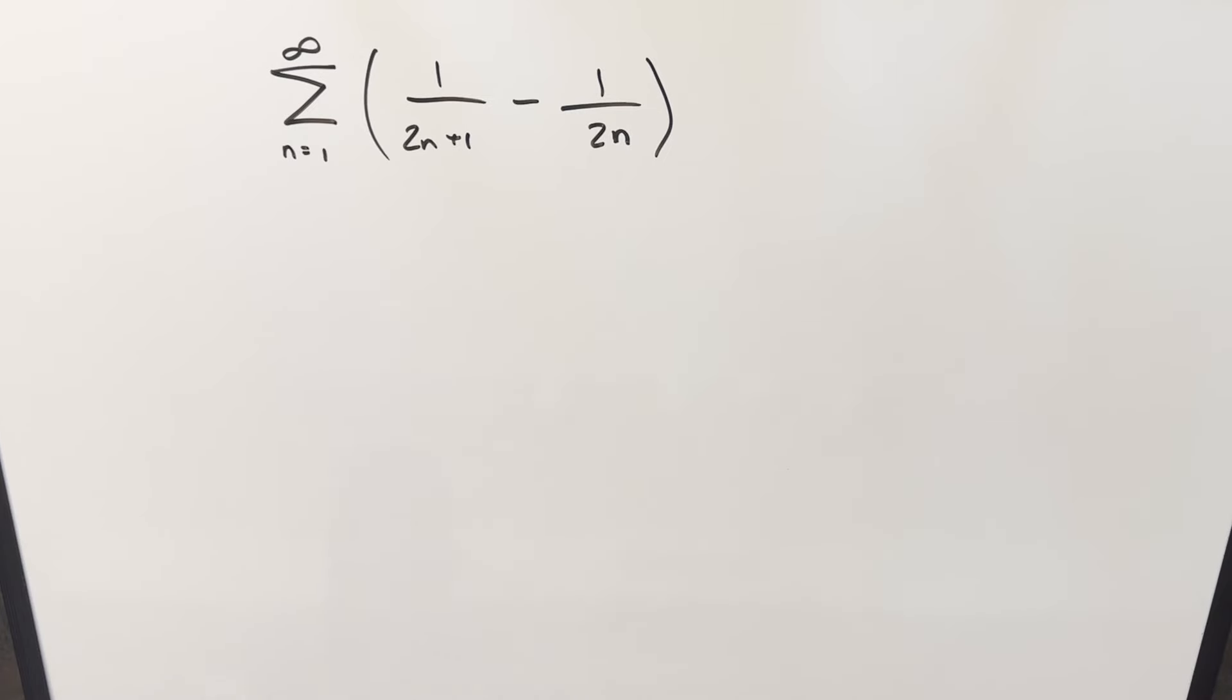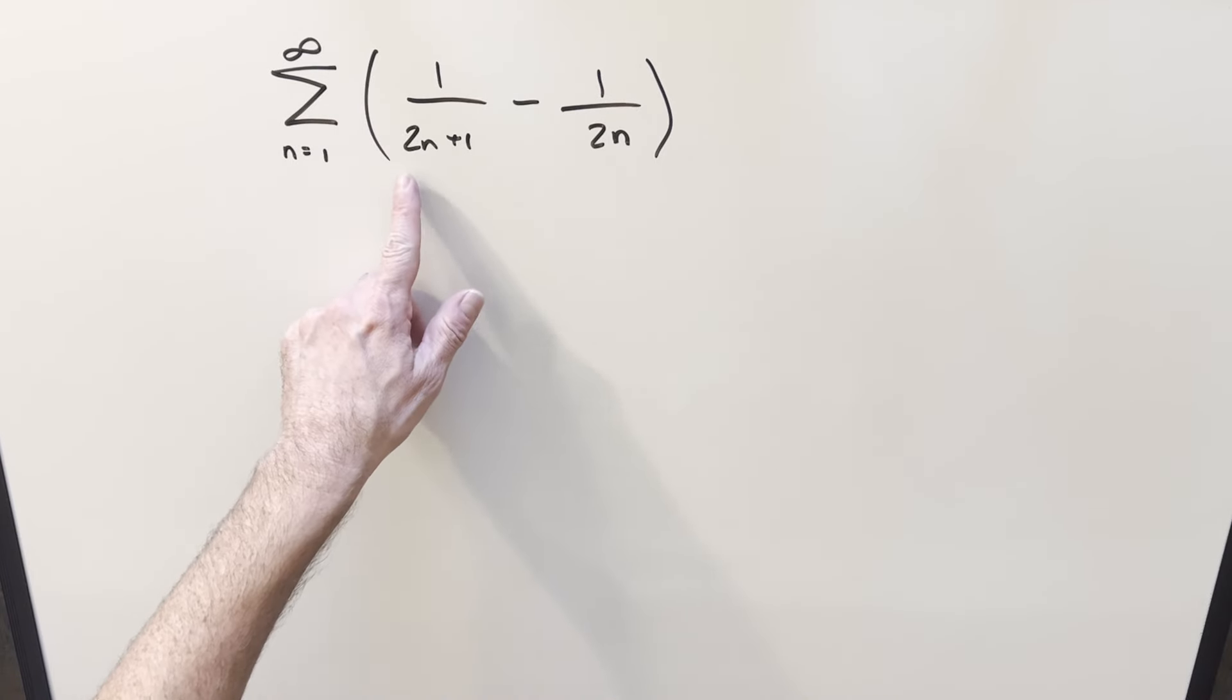Okay, we've written an interesting series. We've got the series from 1 to infinity of 1 over 2n plus 1 minus 1 over 2n. And you may notice this is really similar to what I did previously. I think the only difference in the other one was we had a 3 here. And this is actually going to be the easier example. This is quite a bit simpler with a 2.